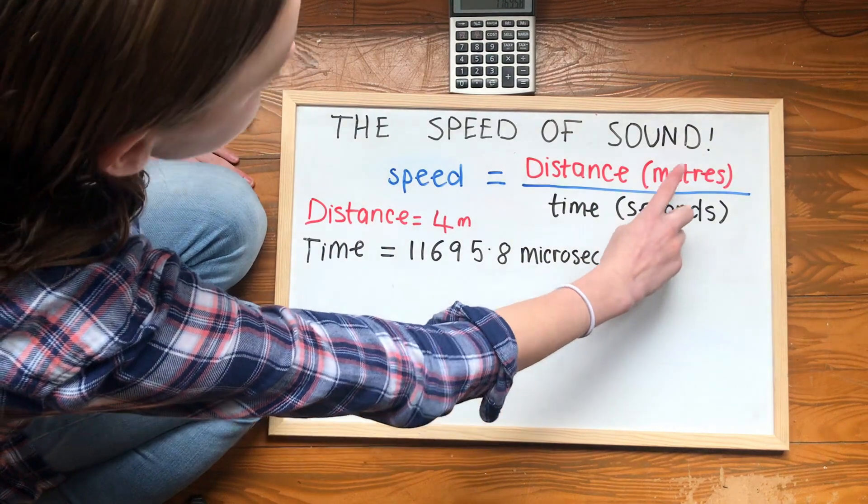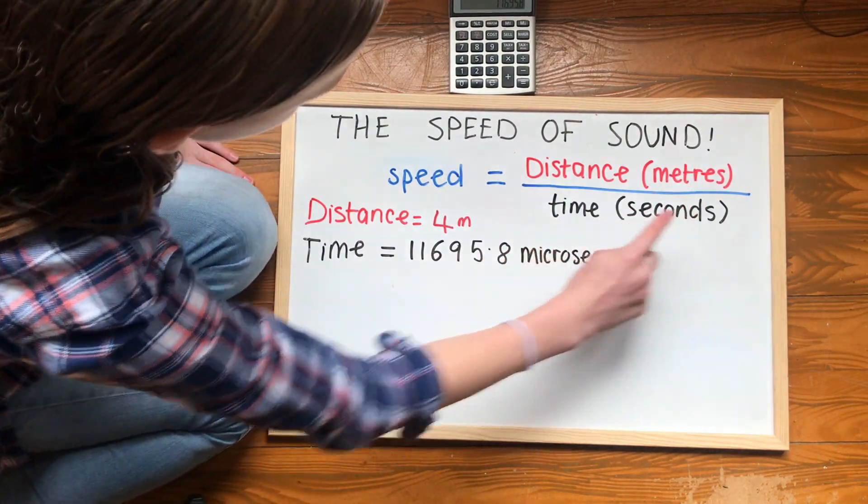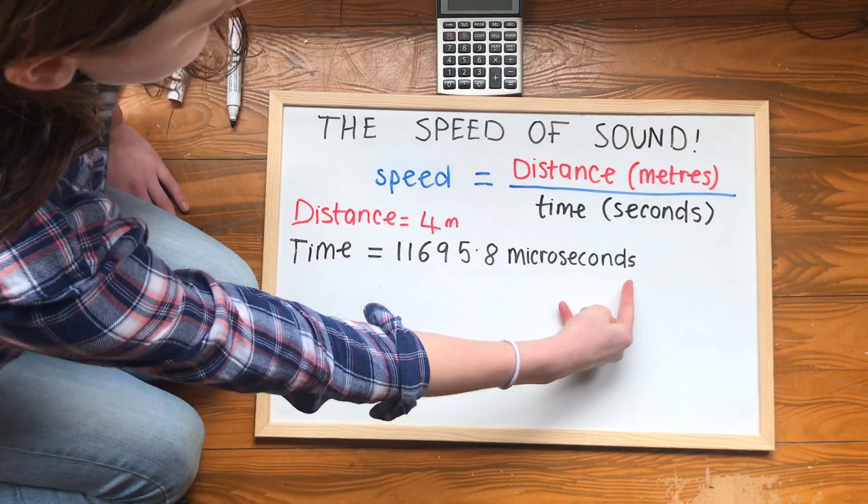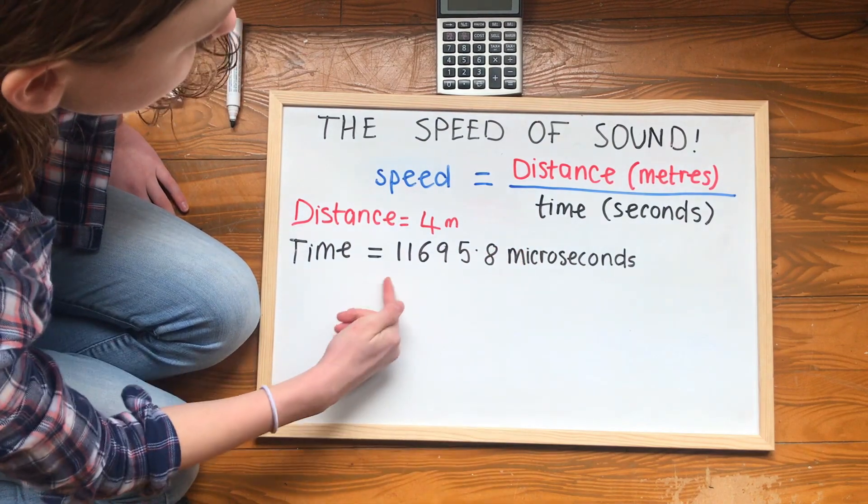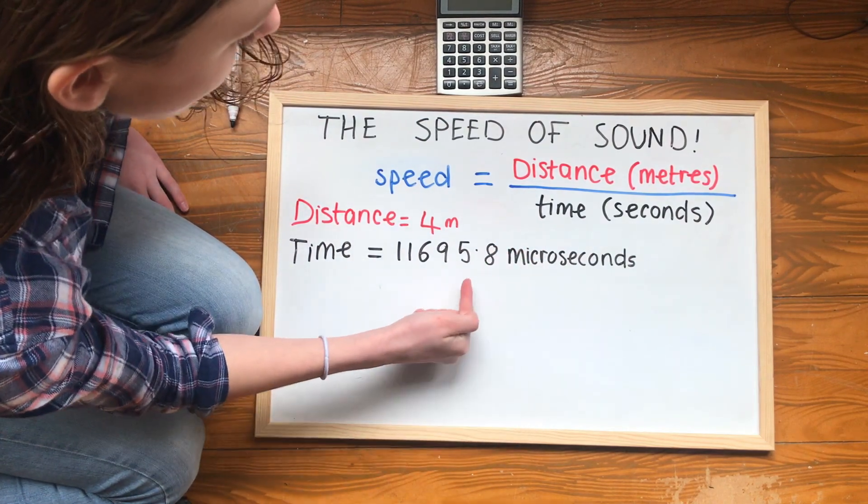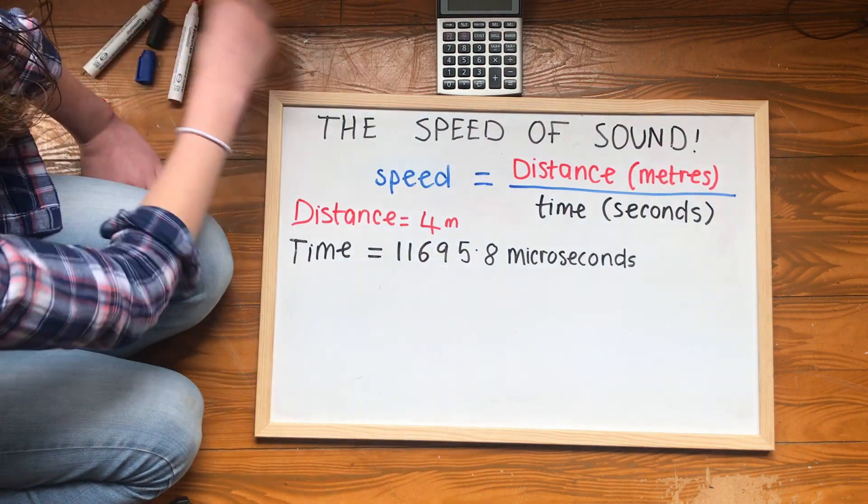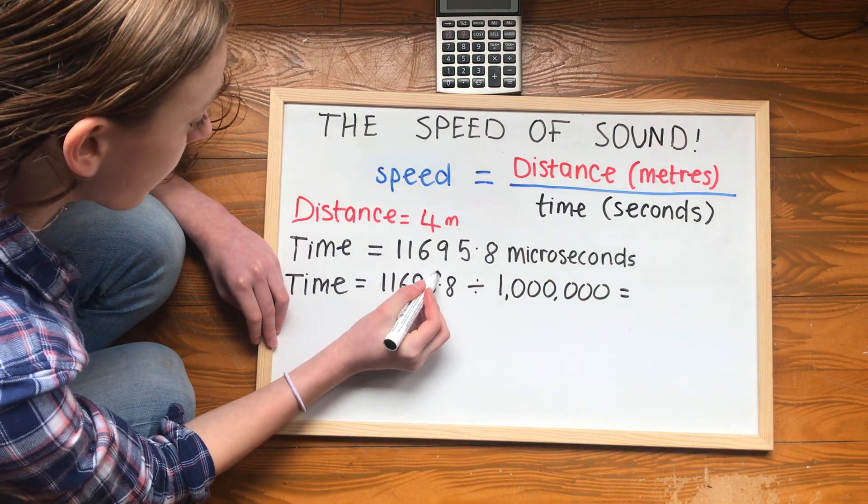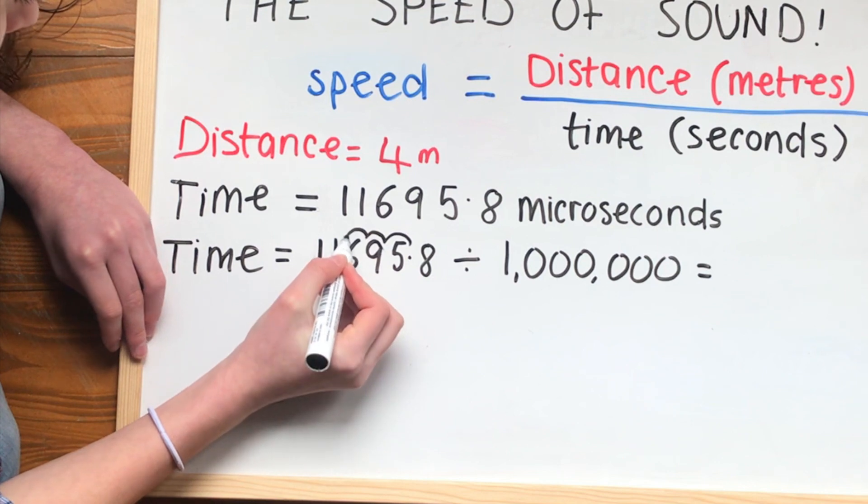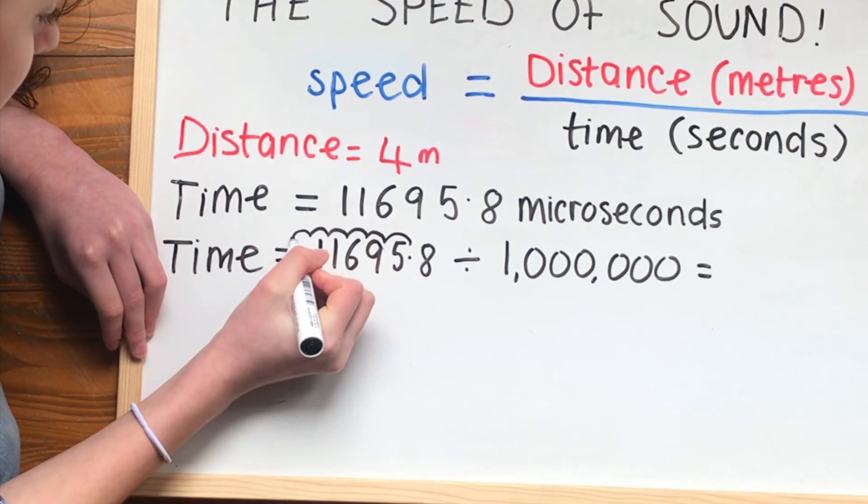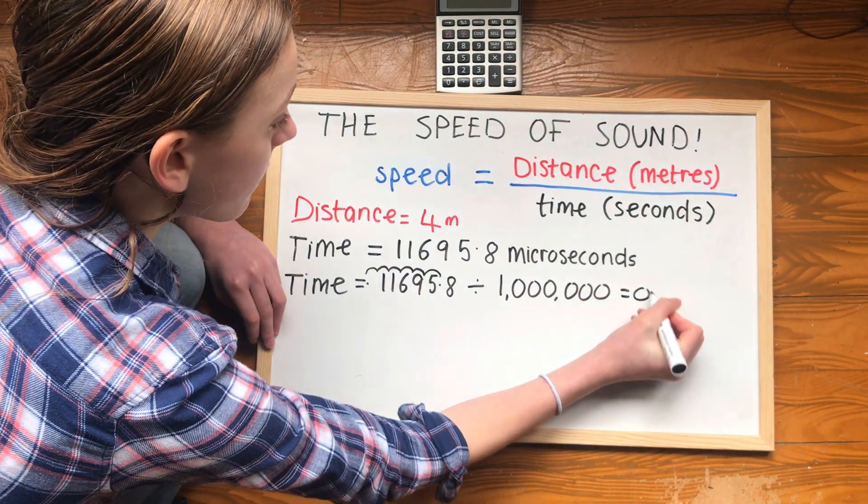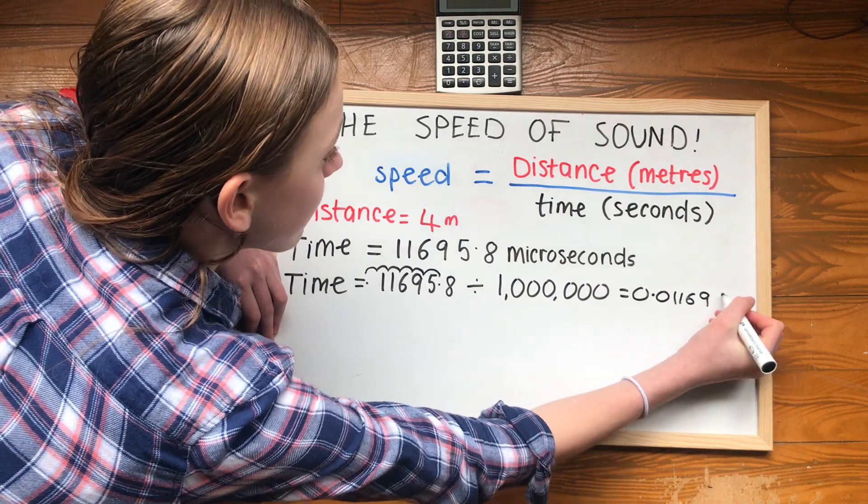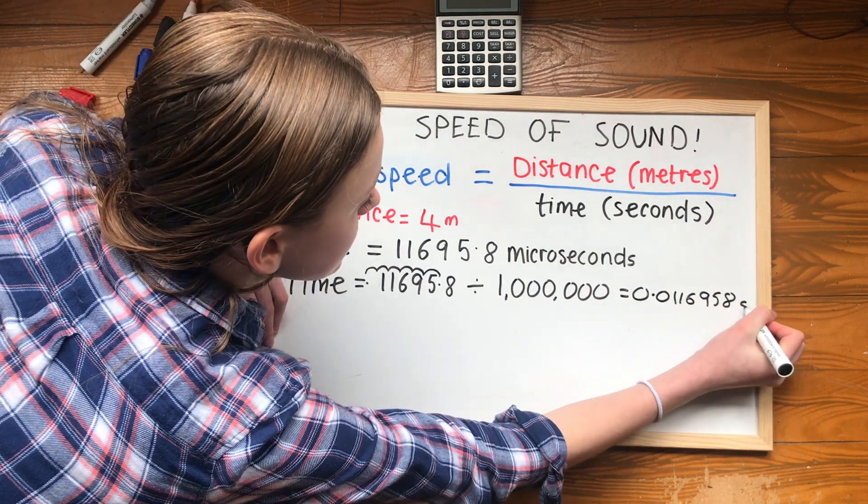We have the distance in metres, but we need the time in seconds, and at the moment the time is in microseconds. 1 million microseconds is equal to 1 second. So if we divide this number by a million, we should get how many seconds it's worth. So, six zeros, so we'll remove the decimal point. 1, 2, 3, 4, 5, 6. So the answer is 0.0116958 seconds.